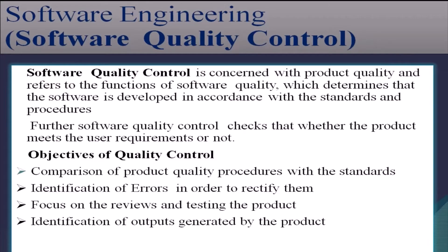Software quality control is concerned with product quality and refers to the functions of software quality, which determine that the software is developed in accordance with the standards and procedures. Software quality control checks whether the product meets the user requirements or not. Several objectives are followed for quality control: comparison of product quality procedures with the standards, identification of errors in order to rectify them, focus on reviews and testing of the product, and identification of the outputs generated by the product.